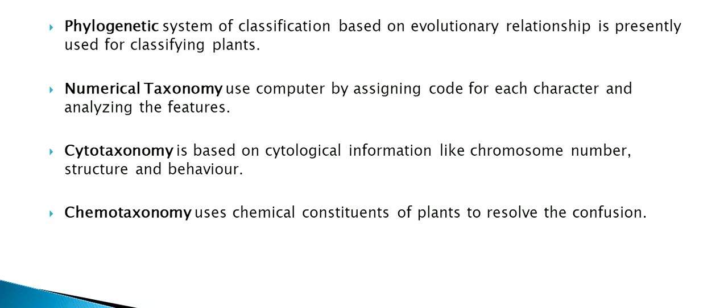Phylogenetic system of classification, based on evolutionary relationship, is presently used for classifying plants. Numerical taxonomy uses computers by assigning codes for each character and analyzing the features. Cytotaxonomy is based on cytological information like chromosome number, structure and behavior. Chemotaxonomy uses chemical constituents of plants to resolve confusion.